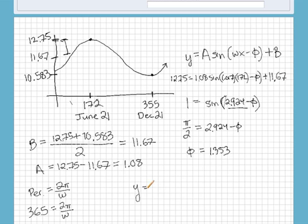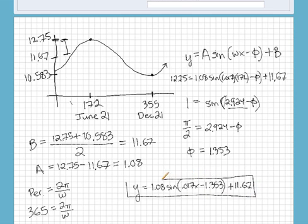So we have everything now. So y equals 1.08 sine of 0.017x minus 1.353 plus 11.67. All right, so there is our formula. And if you graph it, you will get something like this here.